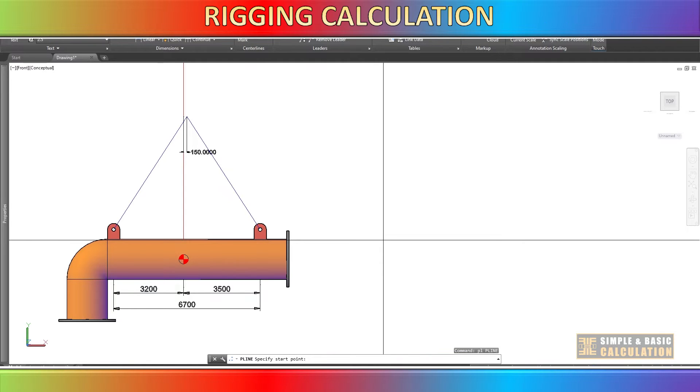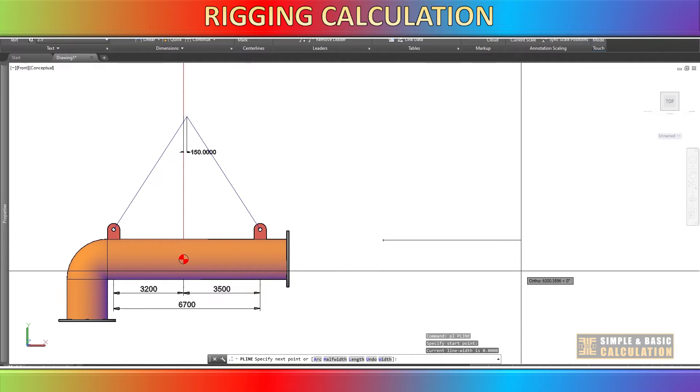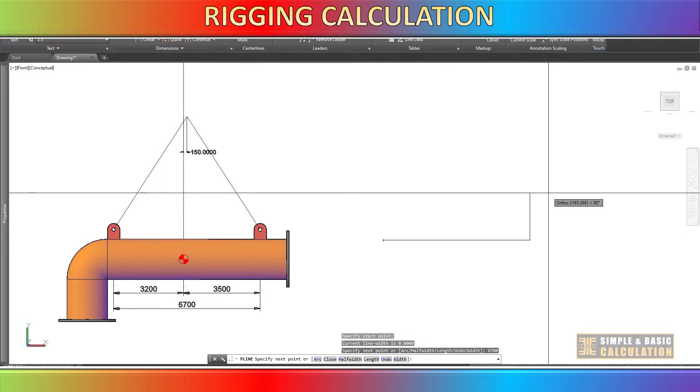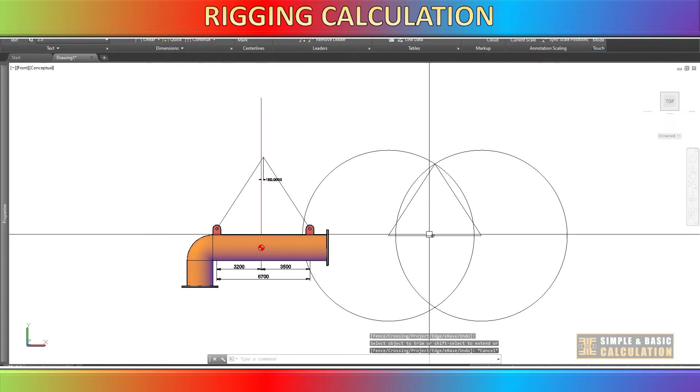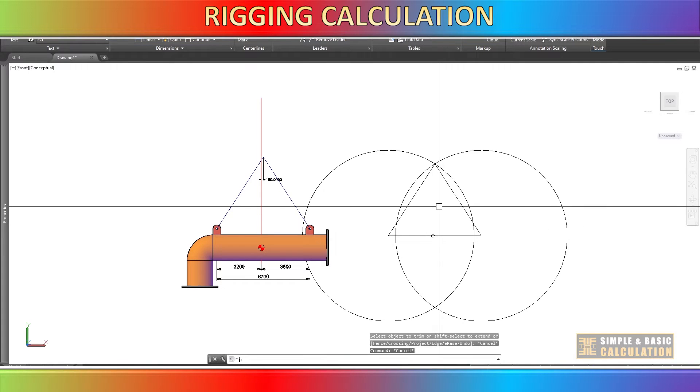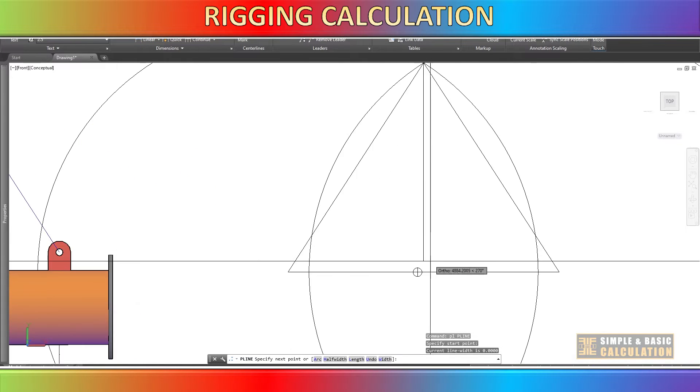Let us do the drawing to see how much the cargo will tilt based on this offset of the rigging. Plot the total distance of lifting point number one and two and also the length of the rigging.